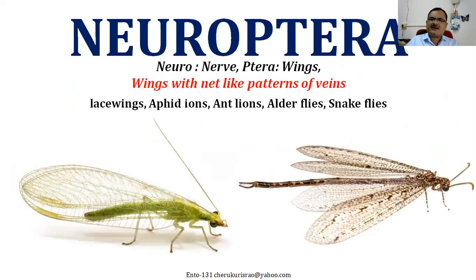Today we start with the order Neuroptera. 'Neuro' means nerve-like and 'ptera' means wings — so wings with net-like patterns of venation. They are transparent and you can very clearly see the wing venation, which looks like a net. All insects with this kind of wing arrangement come under Neuroptera. Commonly we call them as lacewings because the wings look like lace.